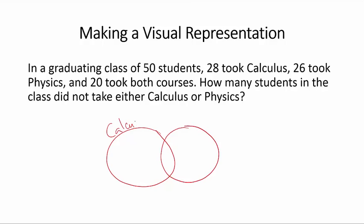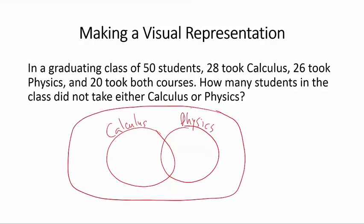Let's say this is the set of students who took calculus, and this is the set of students who took physics. We can also represent the universe here. This is the total number of students. We know that there are 50 students, that's our universe, and let's write here the number of students who took neither calculus nor physics.